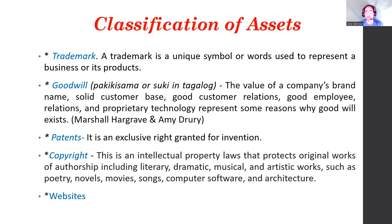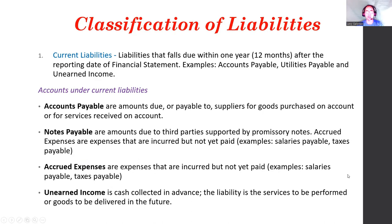Just like assets, liabilities are also classified. Current liabilities must be settled within 12 months after the reporting date of financial statements. Examples include accounts payable, utilities payable, and unearned income — these are what the company must pay within 12 months. Other examples of current liabilities are notes payable and accrued expenses.